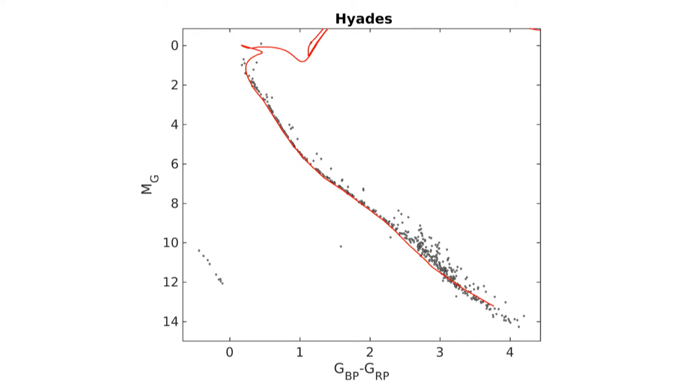The cluster sequences are extremely thin, with the binary sequence well seen slightly above it. We compare the sequences with isochrons, and we derive the ages of the clusters through isochron fitting.